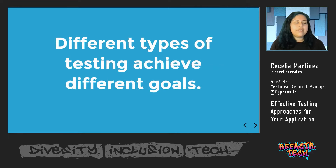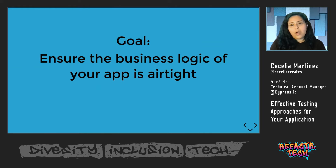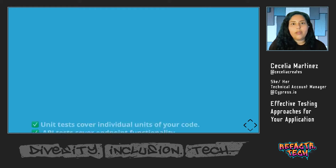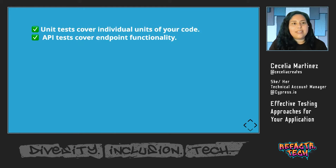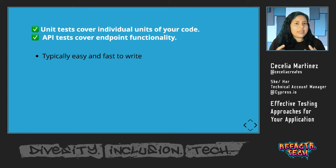Different types of testing are going to achieve different goals. So I want to go through these goals and talk about what types of testing you can use to achieve them. The first goal is ensuring that the business logic of your app is airtight. Unit tests and API tests can help you accomplish this. Unit tests cover individual units of your code — individual functions. API tests cover endpoint functionality. These are very specific, small tests that cover one type of behavior for that unit. They're typically really easy and fast to write because they're only dealing with one specific unit.